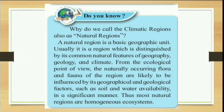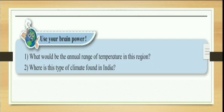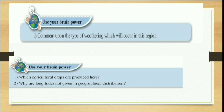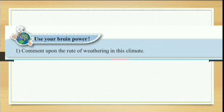Apart from this, 'Do You Know: Why do we call climatic regions as natural regions?' along with its answer given in a paragraph is also eliminated. Next, 'Use Your Brain Power: What would be the annual range of temperature in this region, and where is this type of climate found in India?' — this is eliminated. Again, sections of 'Use Your Brain' based on agriculture, longitudes, and weathering are also eliminated.